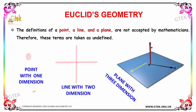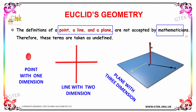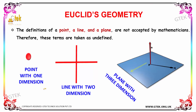According to Euclid's geometry, the definitions of a point, a line, and a plane are not accepted by mathematicians. Therefore, these terms are taken as undefined. A point has one dimension, a line has two dimensions, and a plane has three dimensions. Each of these is considered an undefined term in Euclid's geometry.